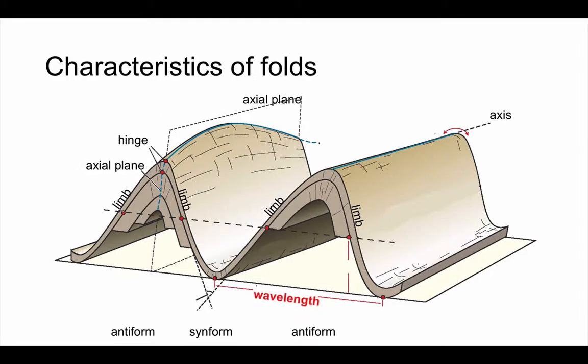The first of these is the idea of a fold having a wavelength. Now the wavelength, as I've marked on this diagram, is the distance between two similar hinge points. So you'll see on this one I've marked them from a synformal hinge point, to the next synformal hinge.